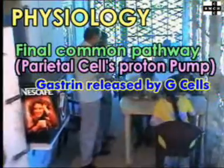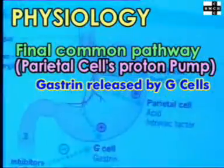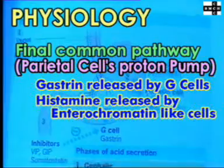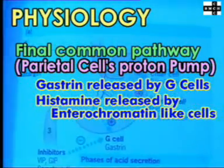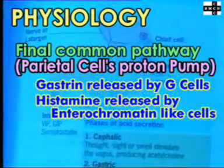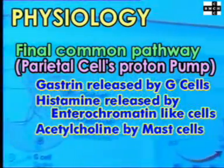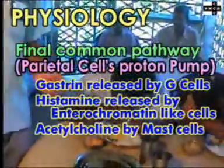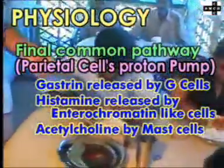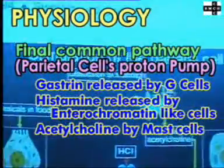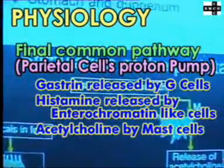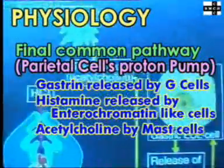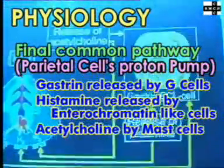The gastrin released by the G cells in the stomach, the histamine released by the gastric enterochromaffine-like cells, and the acetylcholine released by the vagus nerve all act on the parietal cell proton pump to produce acid. Hence, the proton pump is the final common pathway.